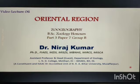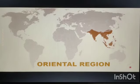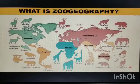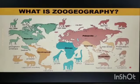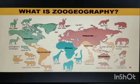First of all, we should know what Zoogeography is. Zoogeography is the branch of geology which deals with the distribution of present and past animal species in the world. Various attempts have been made during the last 100 years to classify the earth into a number of regions or realms.